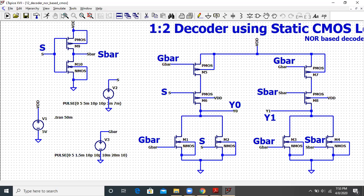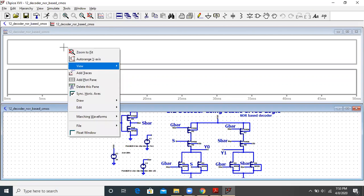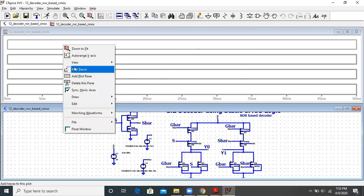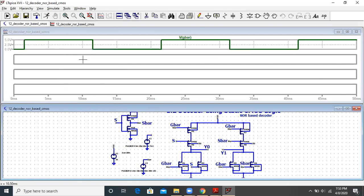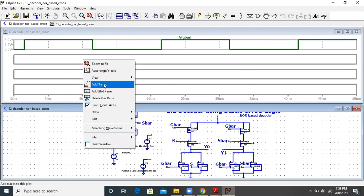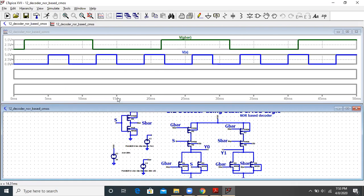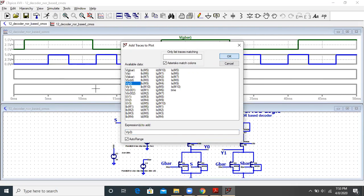So let me simulate this. I have to have four plane plots. The four plane plots will be the first will be G-bar, which is our active low input enable input. Next will be my input S. And then I have my two outputs, that is Y0 and Y1.